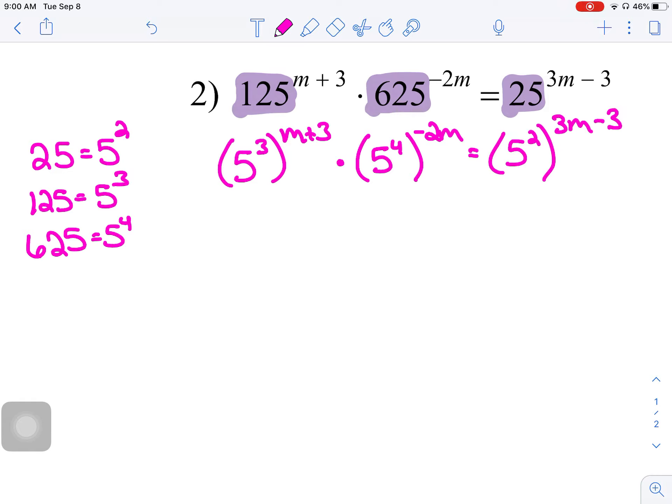All right. Exponent rules kick in. We're going to take power times power, power times power, power times power, the whole way across. So, 5 to the 3m plus 9 times 5 to the negative 8m equals 5 to the 6m minus 6.